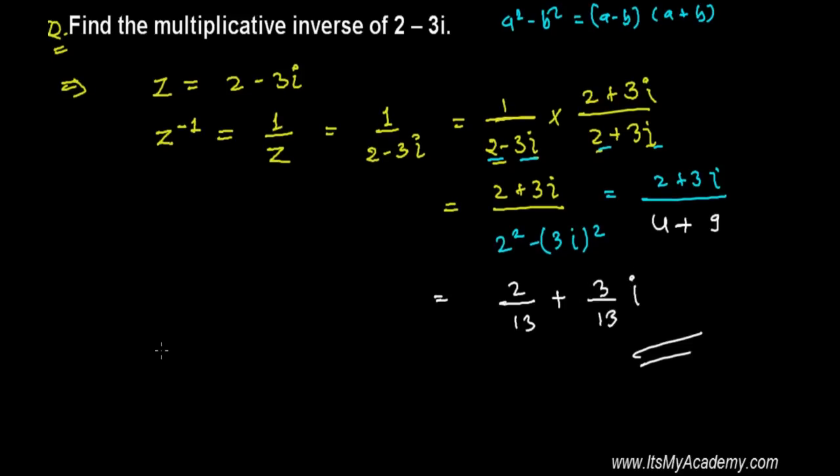We have one more method to find out the multiplicative inverse of any complex number. Let me show you here. Any complex number inverse, multiplicative inverse, is simply the conjugate of that divided by the square of the absolute value of that.